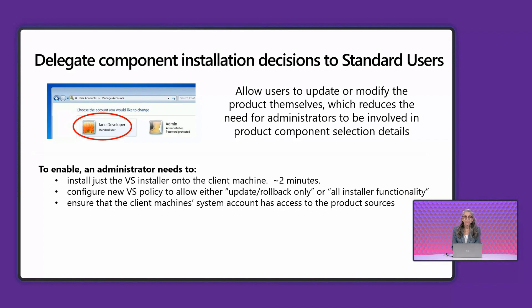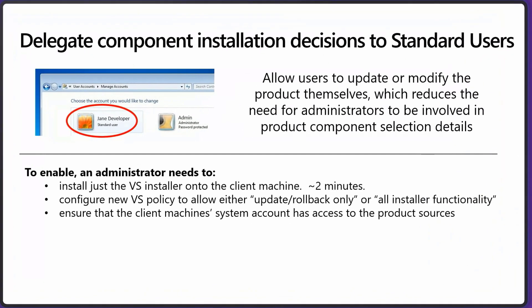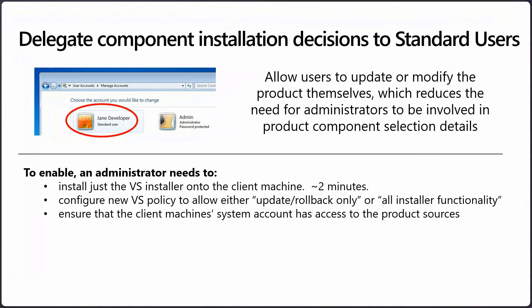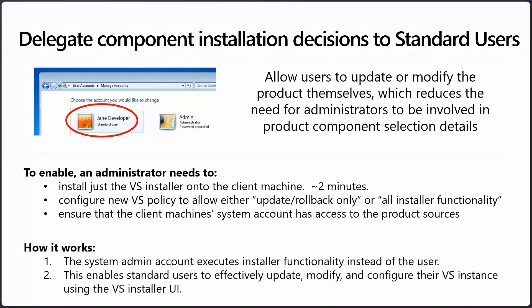To relieve these pain points, we now provide a relatively easy way for administrators to intentionally and effectively delegate control of installer functionality to standard users. To enable this on the client machine, the admin needs to install just the installer, configure a new standard user policy, and ensure that the system account has access to the product sources. Once the client machine has been properly set up, the burden of responsibility for picking and choosing which Visual Studio components to install or update can transition from the administrator back to the developer.